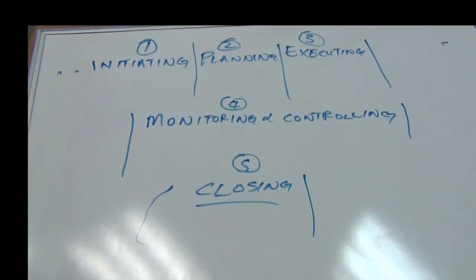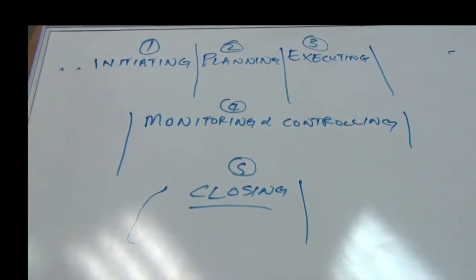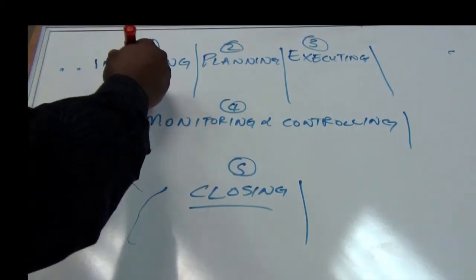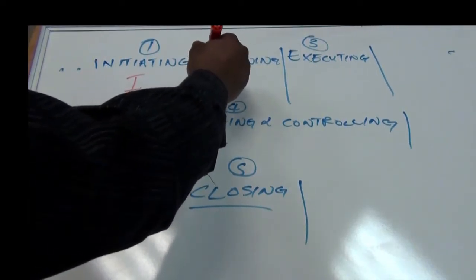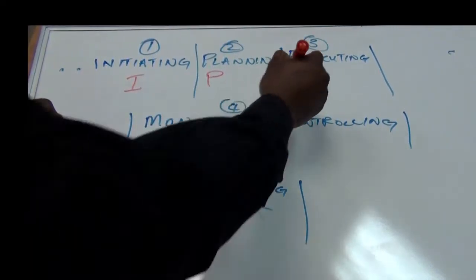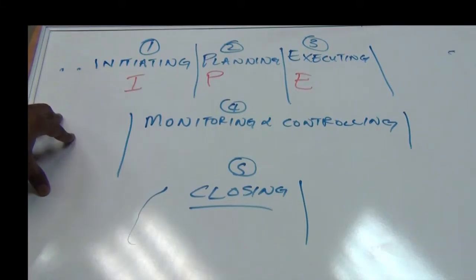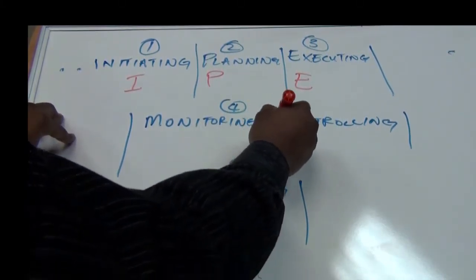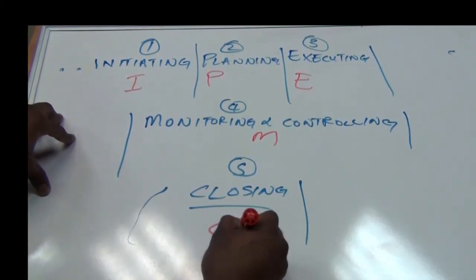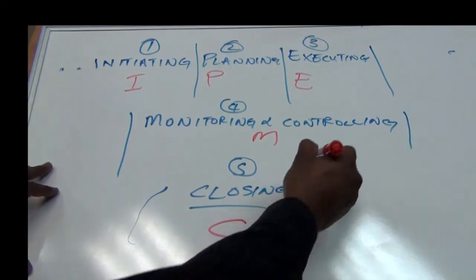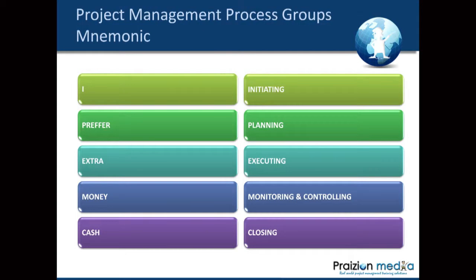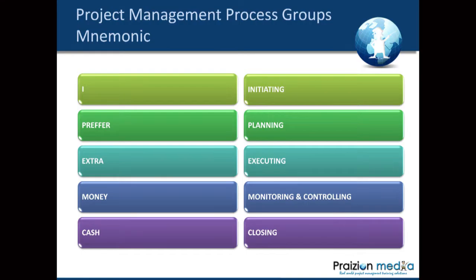I'm going to give you a mnemonic to remember these five process groups because it's so important. I want you to have a mnemonic to remember those. And the mnemonic is this: I prefer extra money in cash. I prefer extra money in cash. That's how you remember the five process groups.